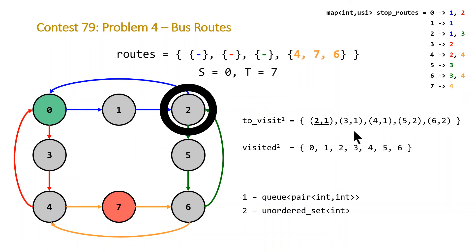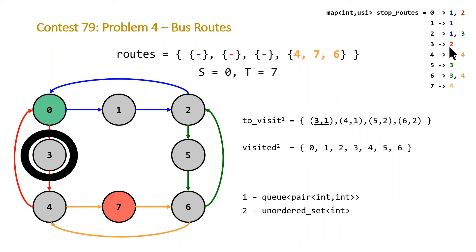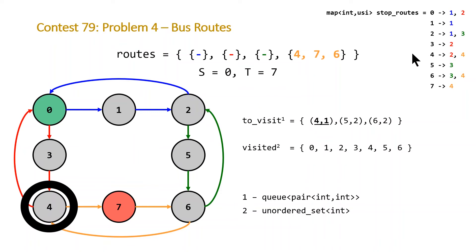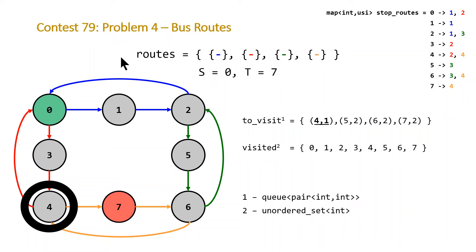Stop 3 is in the red route, which has already been cleared, so we do nothing. Stop 4 is in both the red route and the orange route. We add any stops not in our visited set — in this case only stop 7. We insert stop 7 into visited and push it onto the queue, and we clear the last route. Now all routes are completely empty.